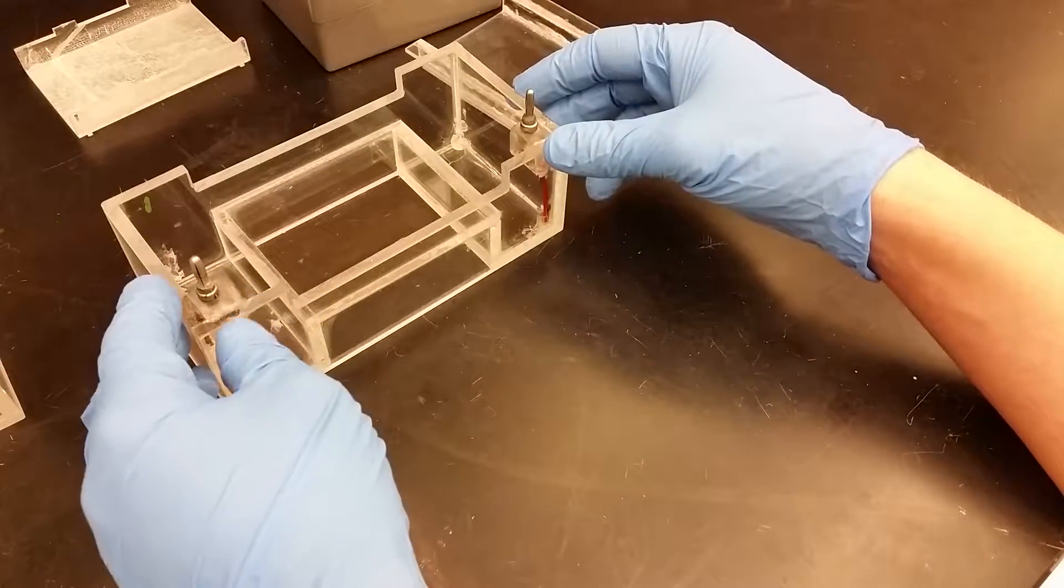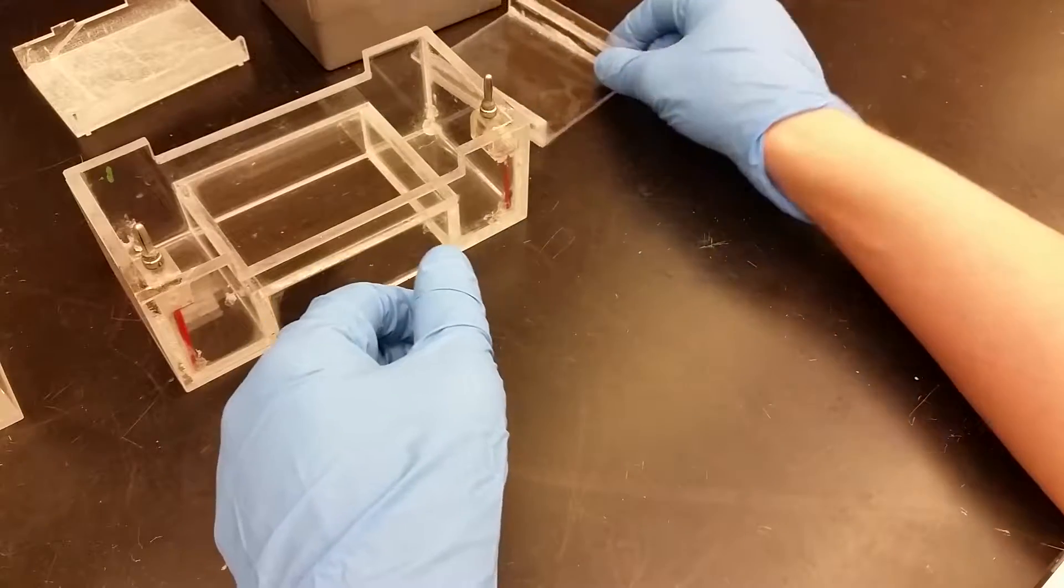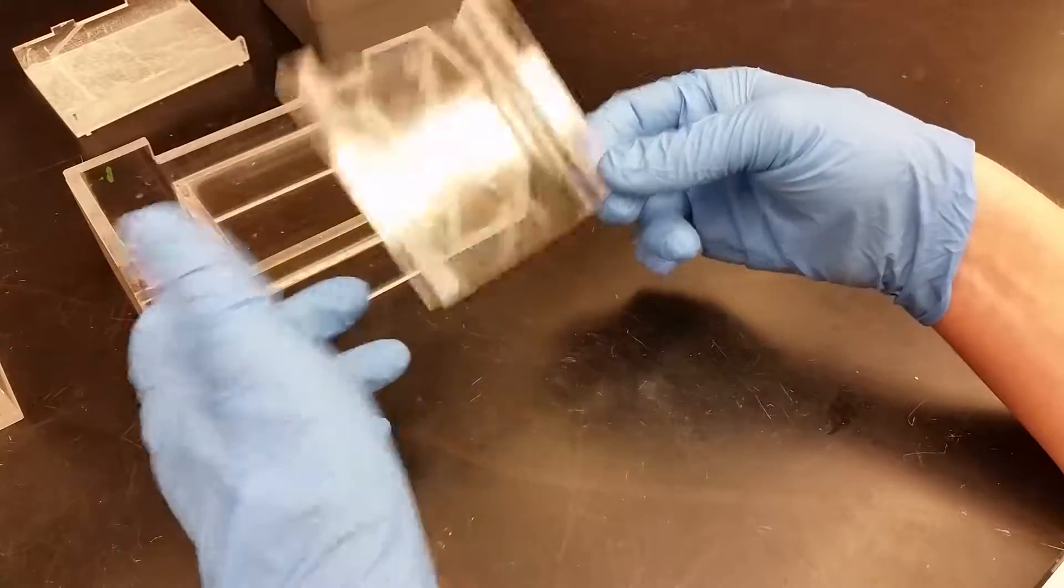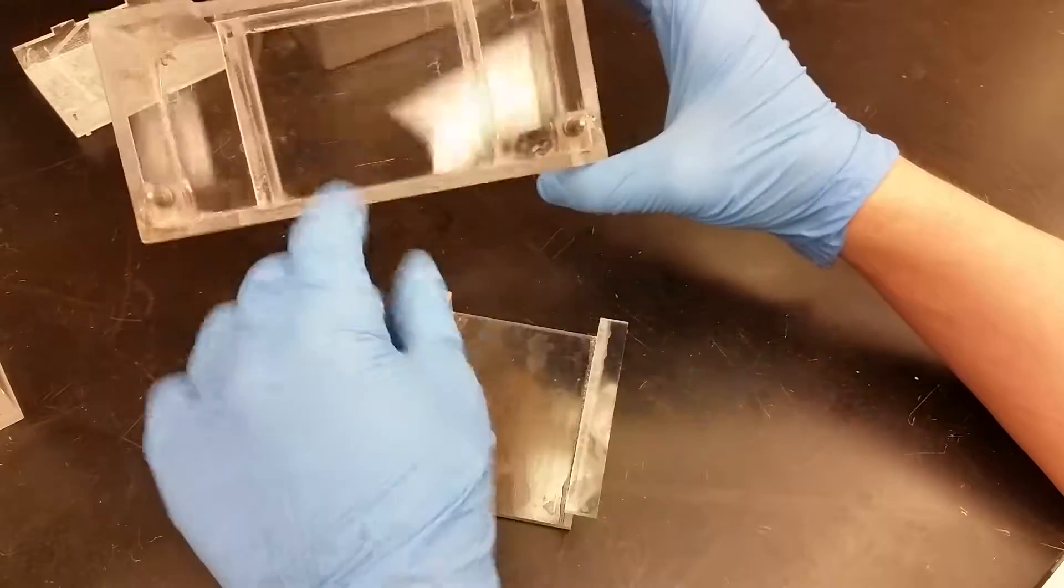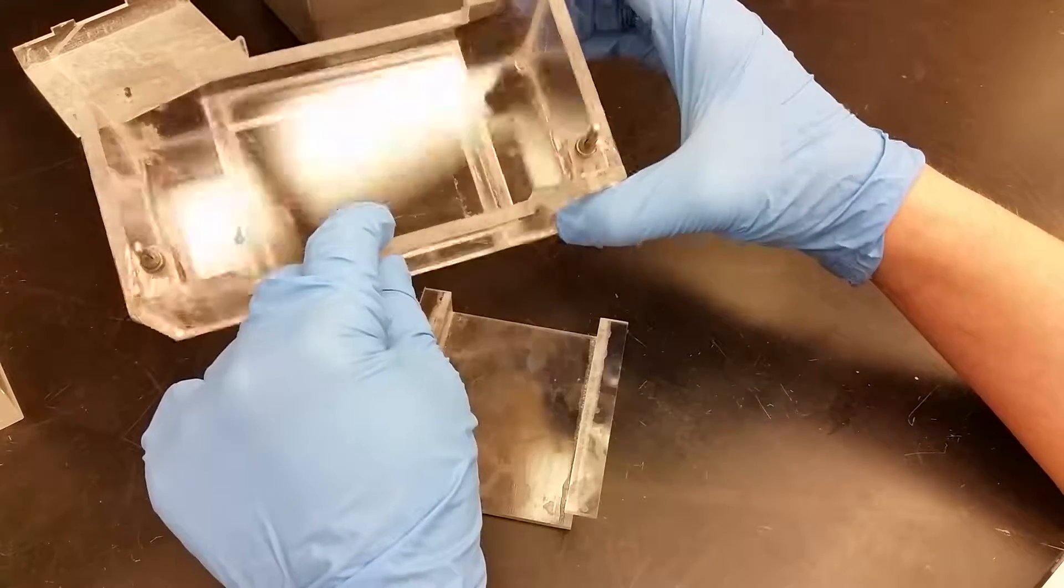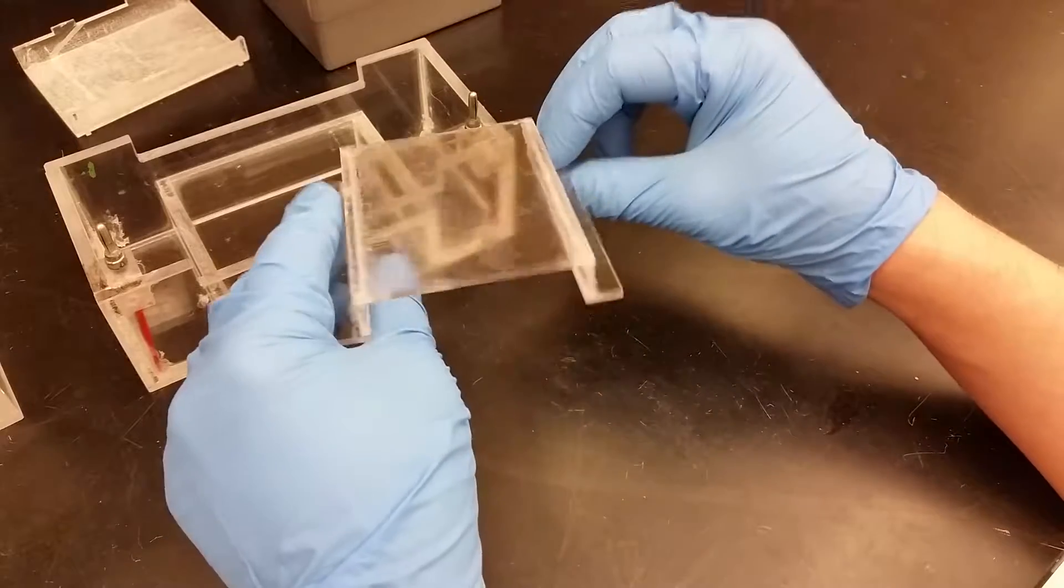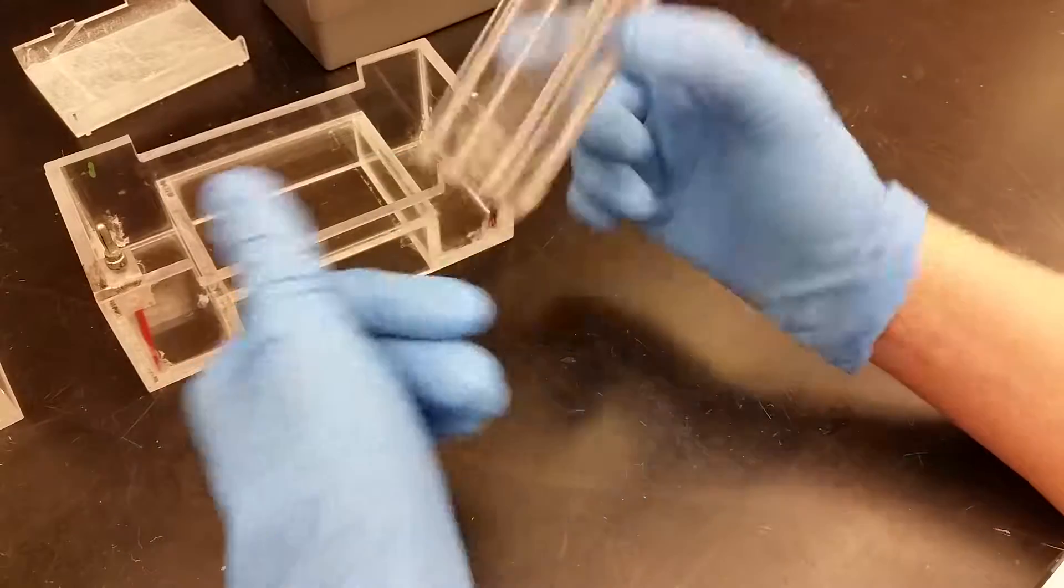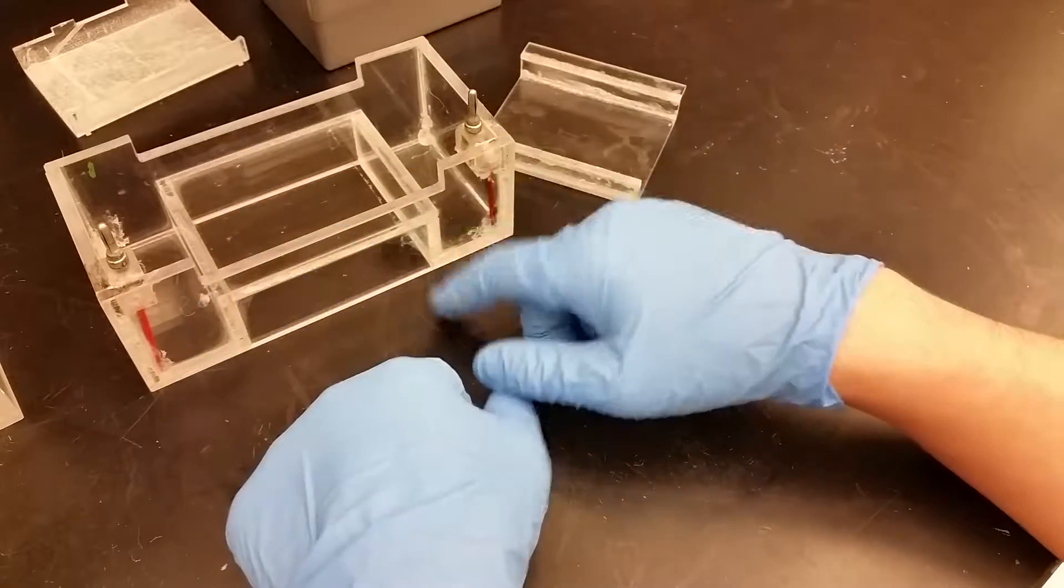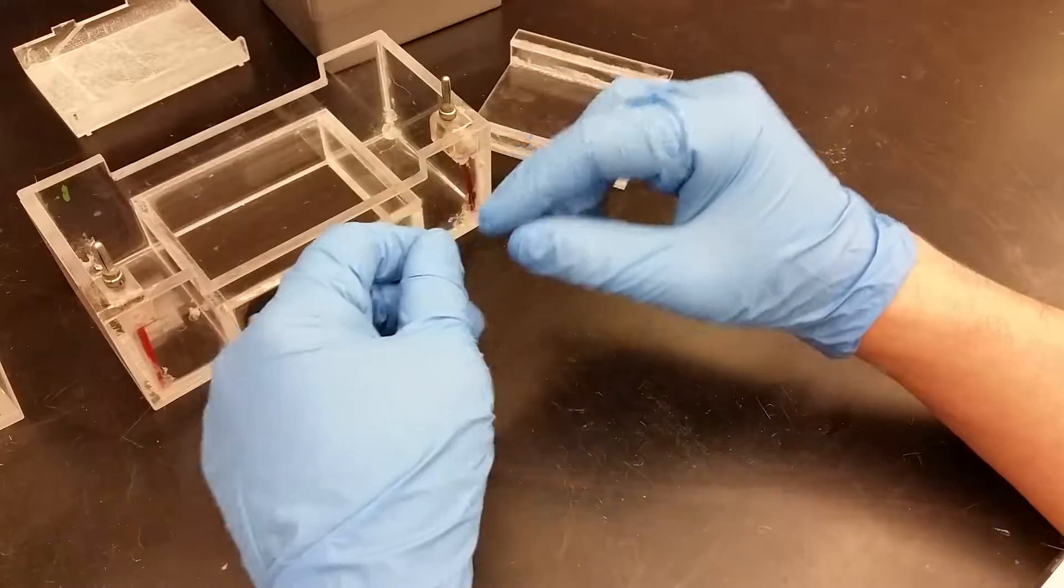If you do decide to go down the path of making your own equipment, you want to look at what materials you'll need. A sheet of Lexan that's about three millimeters thick will cost you about 15 bucks. Something that's about 10 millimeters will cost you maybe 30 or 40 bucks. But out of one sheet you can get at least three or four gel casting trays and maybe one or two gel casting chambers.